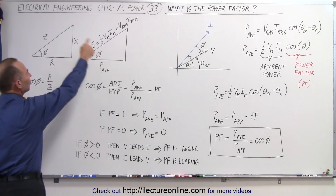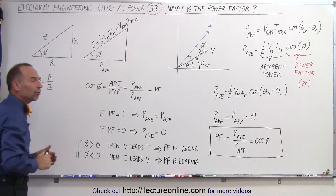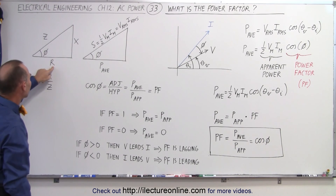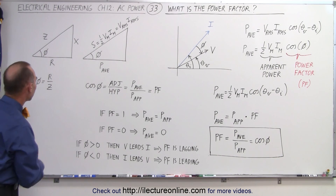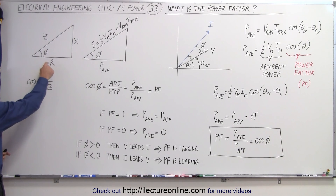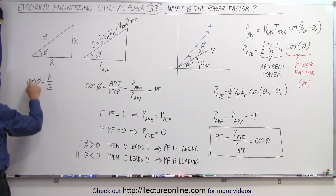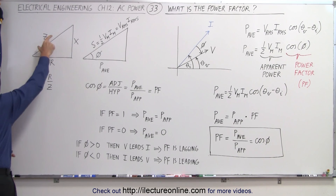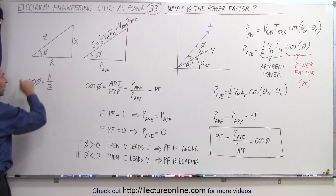Now, if we take a look at these two triangles on the left, you see something fairly familiar. Here we have the reactance of the circuit, the resistance of the circuit, and the impedance, and then we have the phase angle. The relationship between the phase angle, R, and impedance is that the cosine of the phase angle is the ratio of the adjacent side over the hypotenuse, or R over Z.